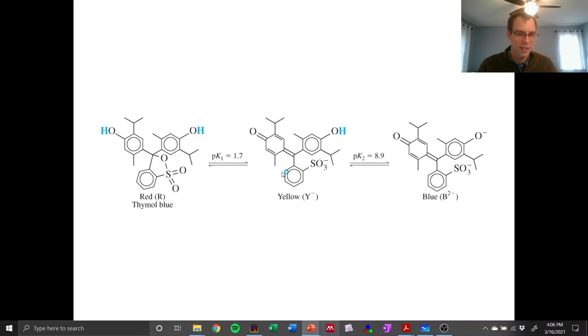And the blue form is, so the yellow has a pK of 8.9 to lose the next proton. And it forms a blue. So you can actually use this for titrations at higher pHs as well. But we're going to have these combinations of these depending on the pH.